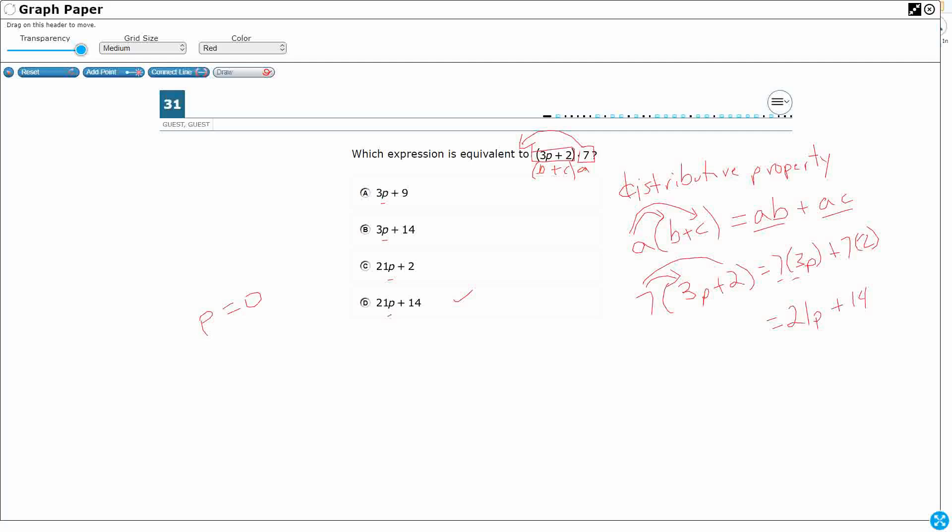I love it when p equals 0 or x equals 0, whatever the unknown is, because you can really eliminate stuff. So take a look at this. 3p plus 2 times 7. So I'm going to make this 3 times 0 plus 2 times 7. So that just makes 0. So it's 0 plus 2 times 7. So really it's 2 times 7, so that's 14.